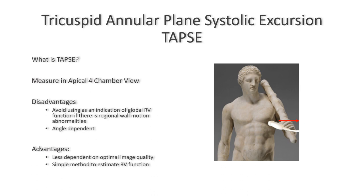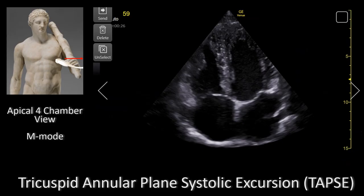Let's talk about some of the advantages of TAPSI. TAPSI is less dependent on optimal image quality, and a lot of times in transthoracic echo you might not have an optimal image, so that's where TAPSI becomes important. It's also a simple method to calculate right ventricular function if there are no regional wall-motion abnormalities.